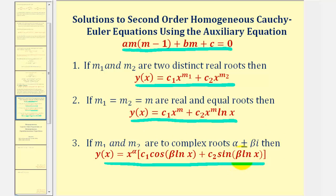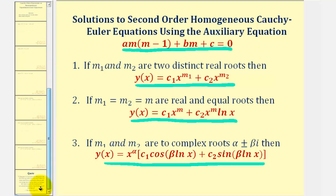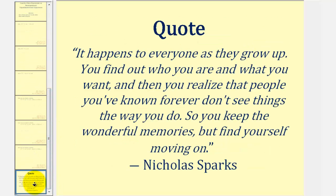For a second order non-homogeneous Cauchy-Euler equation, the general solution process yields the complementary function, and then we could use the method of variation of parameters to find a particular solution and form the general solution. In the next several videos, we'll look at solving second order homogeneous and non-homogeneous Cauchy-Euler equations. I hope you have found this introduction helpful.